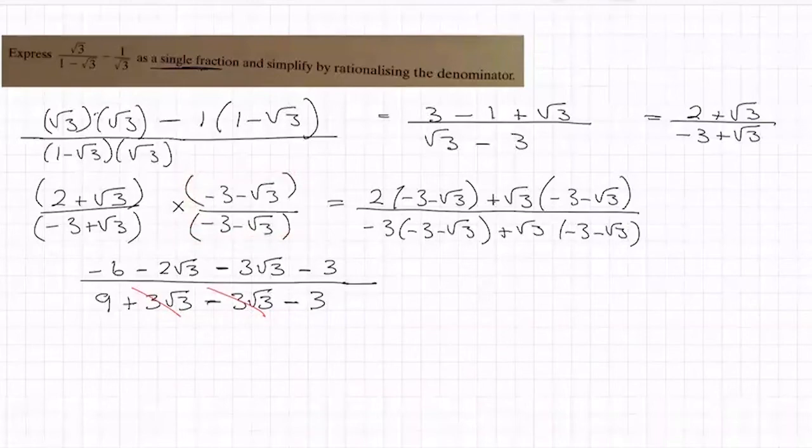So let's tidy him up then. I have minus 6 minus 3 is minus 9, and I have minus 2√3 minus 3√3 is minus 5√3. All over, 9 minus 3 is 6.